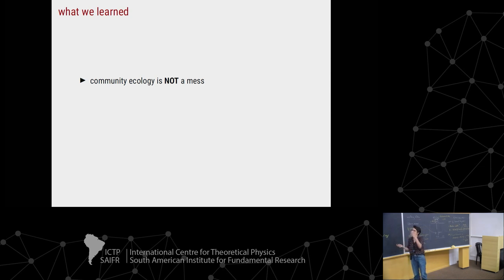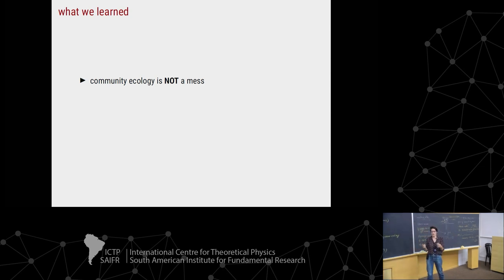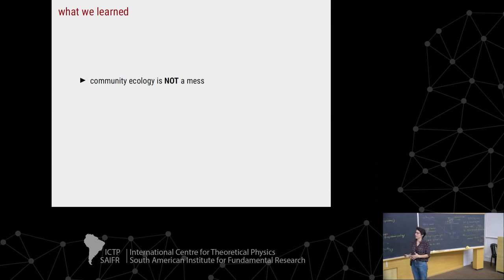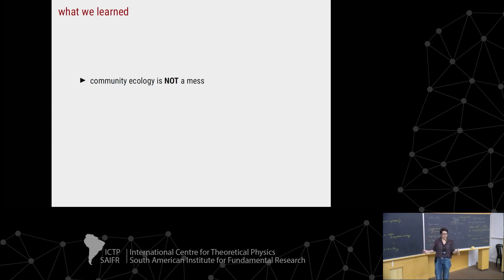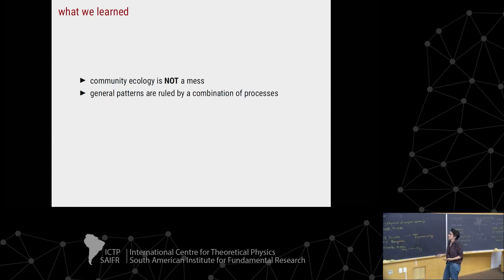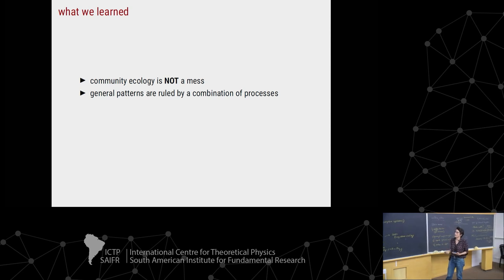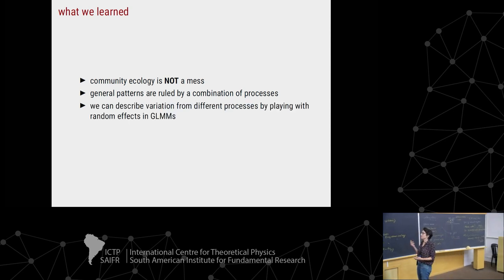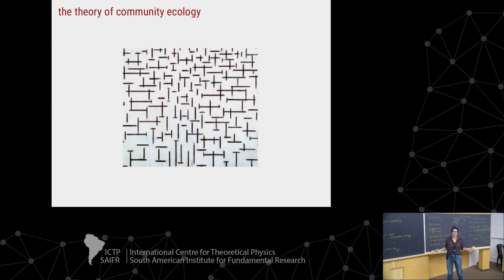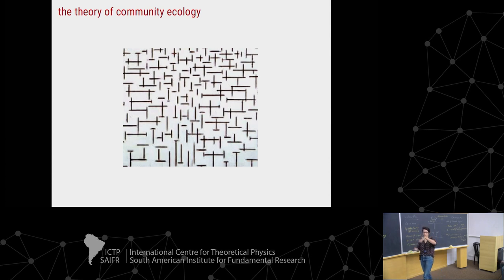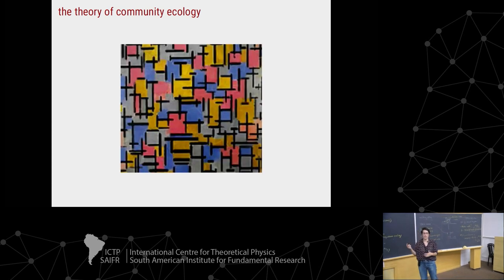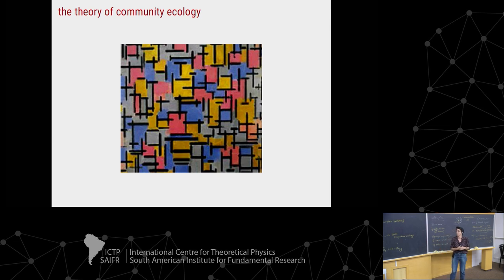My main points: community ecology is not a mess. We are trying to organize theories, ideas, and concepts through a framework and we should all stop for a moment and think if this works, and if not, what we can propose. General patterns are ruled by a combination of processes. What is really new is that we can describe variation from different processes by playing with the random effects in the mixed models. I hope I brought a little bit more to fill the path that is the theory of community ecology with ideas, concepts, and models. Thank you.